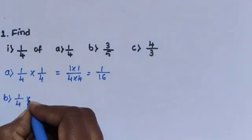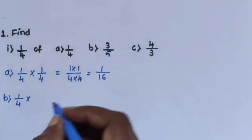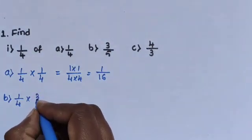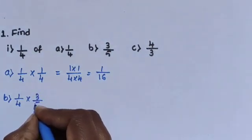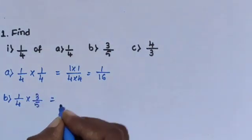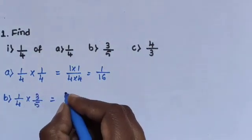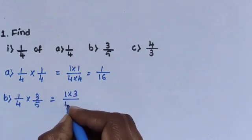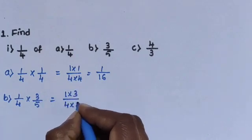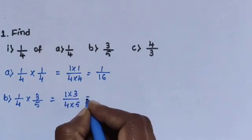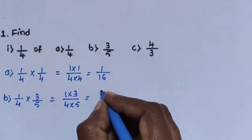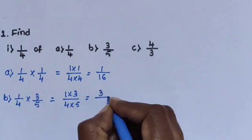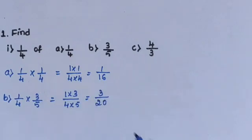Next, question B: 1/4 multiplied by 3/5 equals 1×3 divided by 4×5. 1 threes are 3, 4 fives are 20. The answer is 3/20.